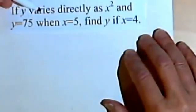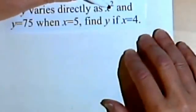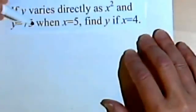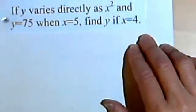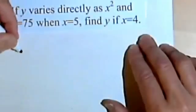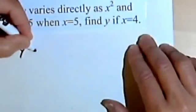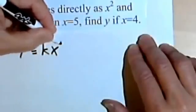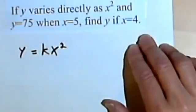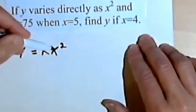Now, here's one that looks a little bit more difficult, but it's really not. If y varies directly as x squared and y equals 75 when x equals 5, find y if x equals 4. So y varies directly as something. So we've got direct variation. Y varies directly as... but it's not just an x, it's an x squared. So this is the only difference is we've got an x squared.